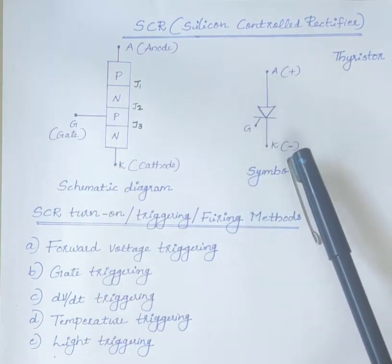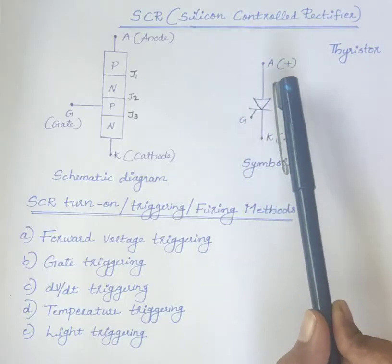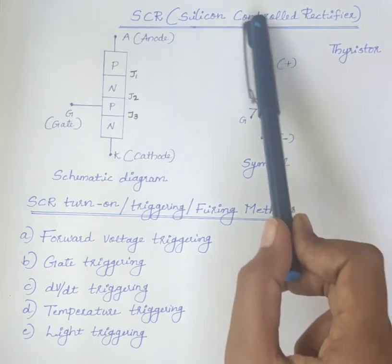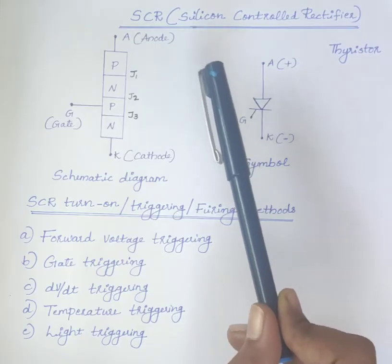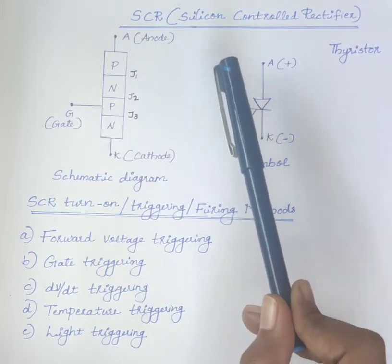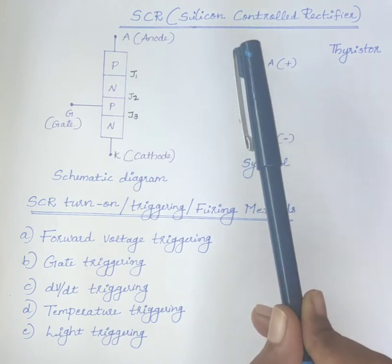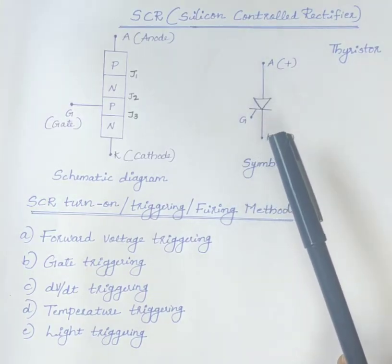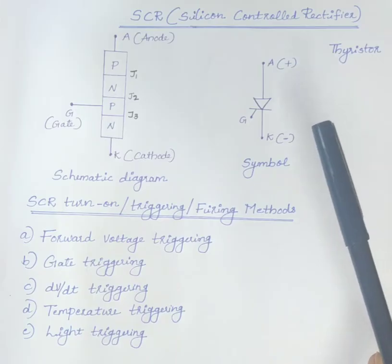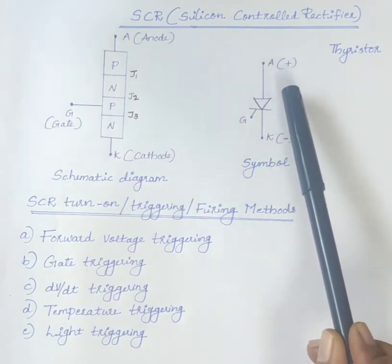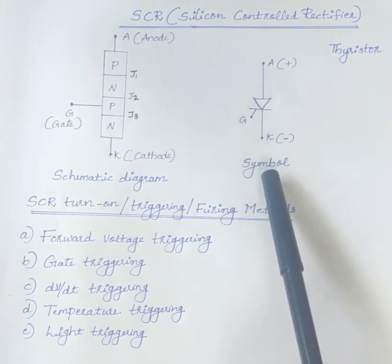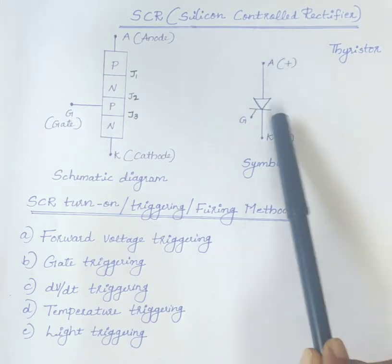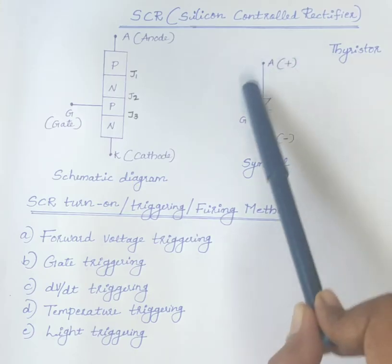It is a semi-controlled switch. For the construction of SCR, silicon is used and its operation as a rectifier can be controlled. Hence the name, silicon-controlled rectifier. Like diode, SCR is an unidirectional device that allows the current to flow from anode to cathode and blocks the current flow from cathode to anode.